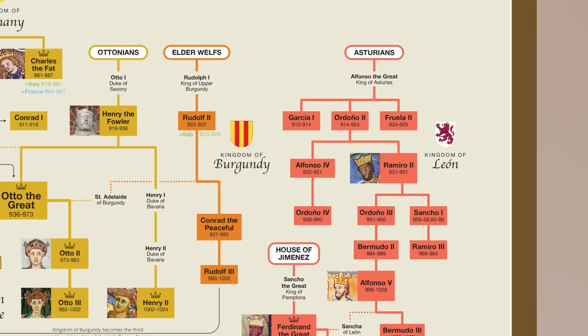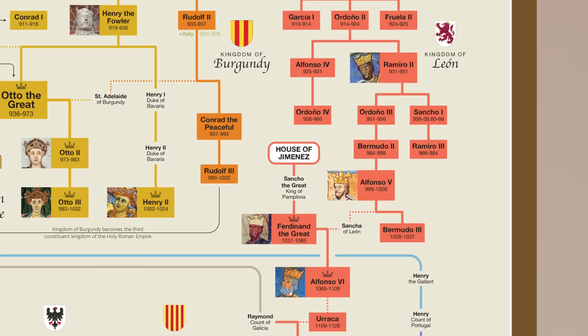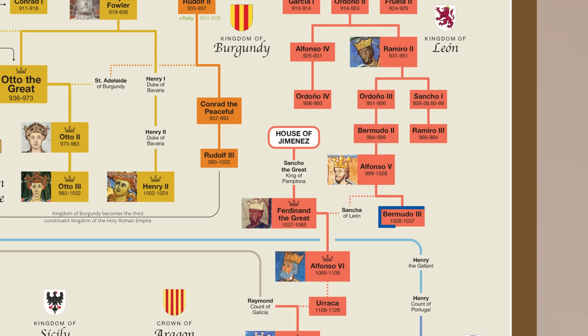Later decades, however, saw the power of the Kingdom of Leon diminish. When Alfonso V died, his son, the young Bermudo III, ascended the throne. However, he was driven out and later killed by the kings of Pamplona, who replaced the Kingdom of Leon as the main Christian power in the region. The marriage of Princess Sancha of Leon and Prince Ferdinand of Pamplona ensured continuity between the two kingdoms, as the following kings of Pamplona, who came from the Jiménez dynasty, were descendants of Alfonso the Great as well through Sancha.